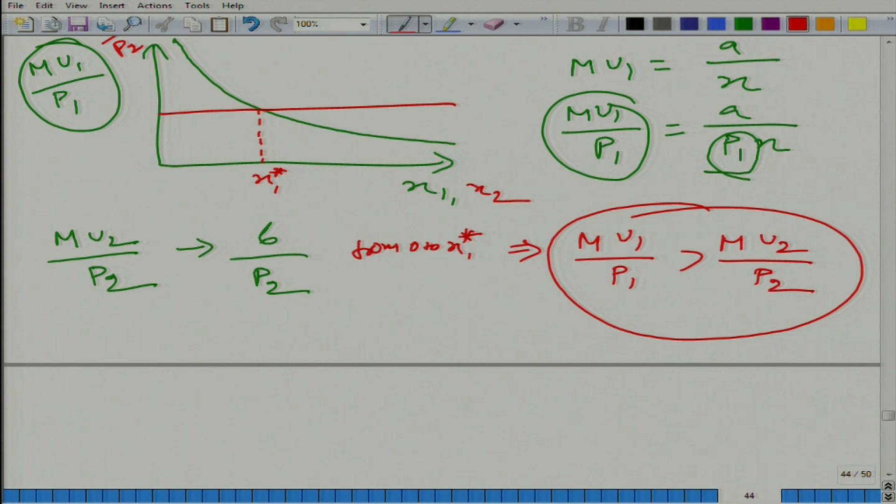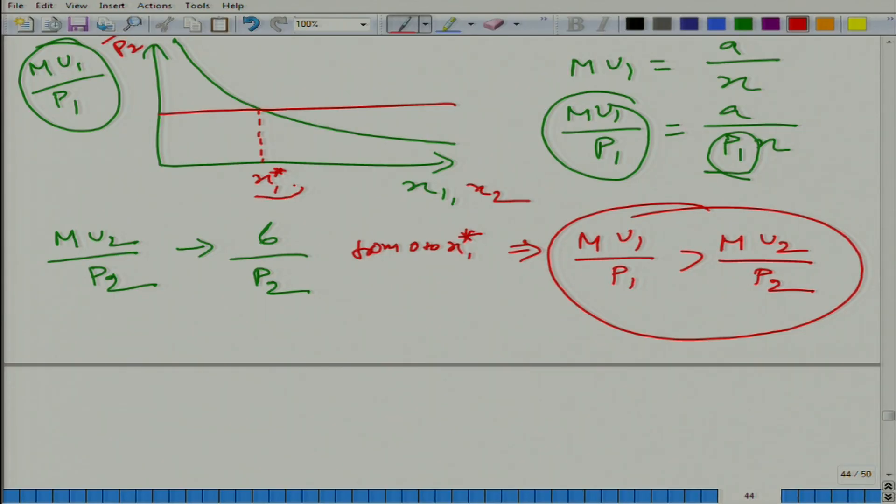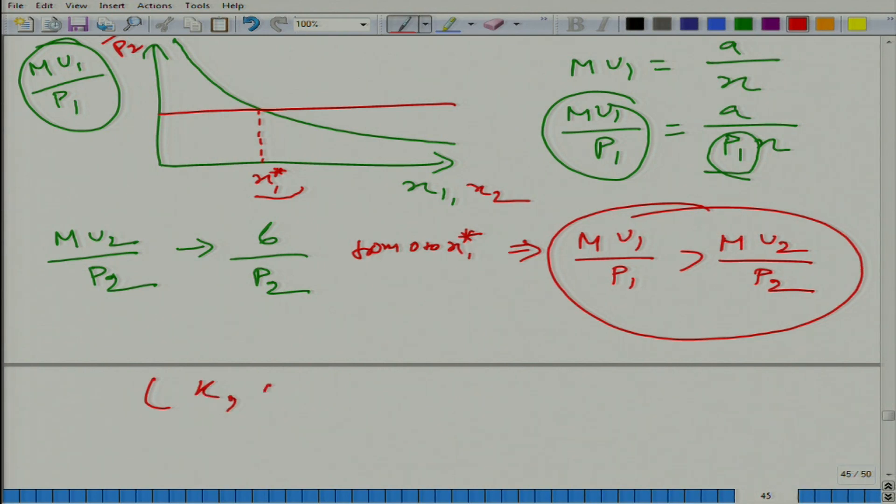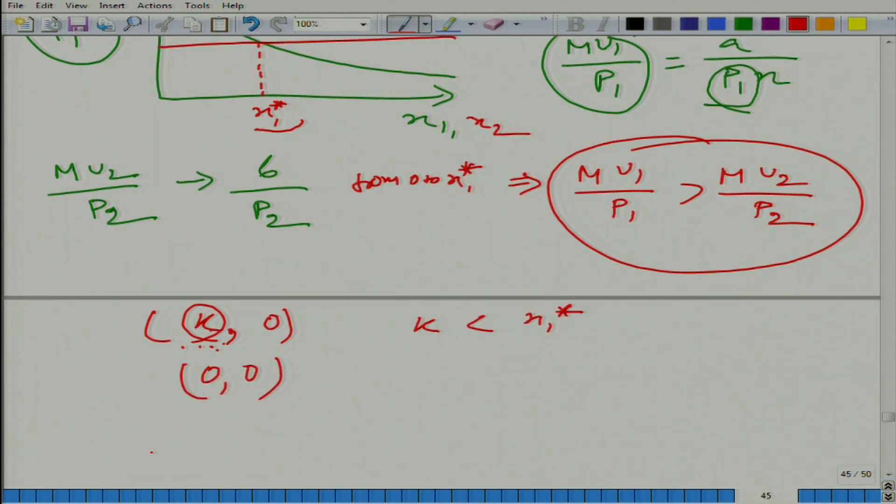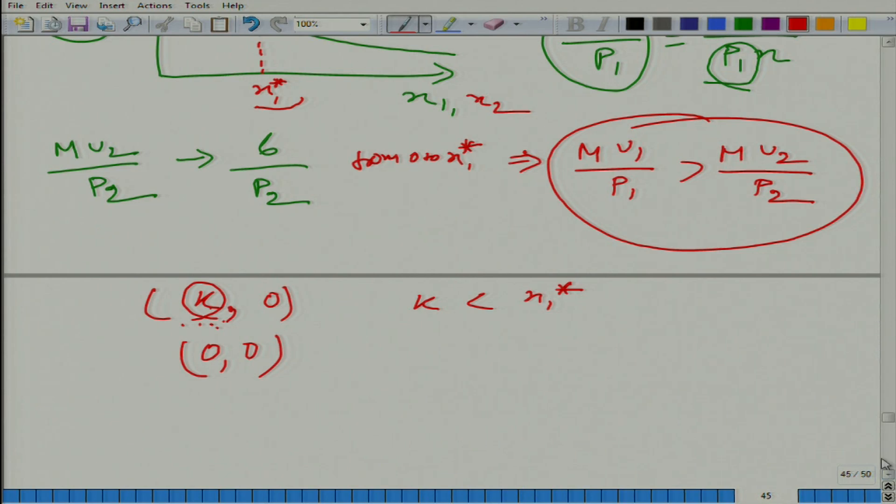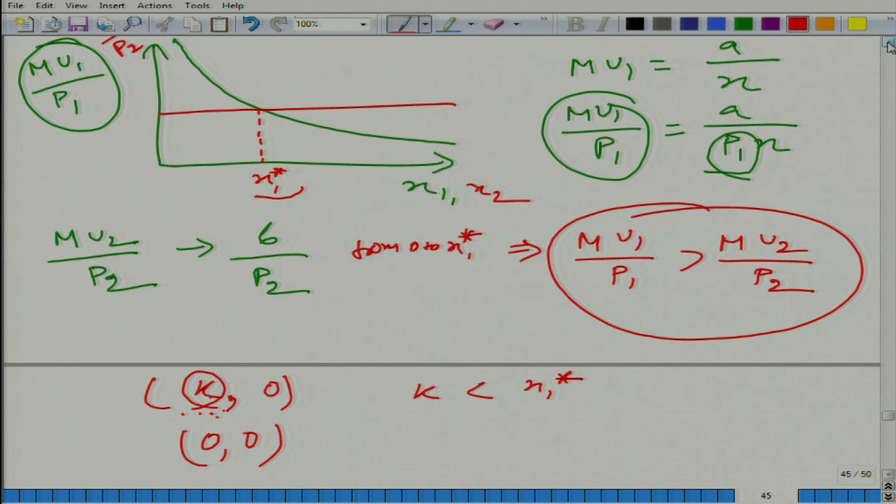What does this equation mean? What will be your interpretation for this equation? More of first good - he will buy only the first good up to this level. Unless this level is achieved, he will not buy the second good. Because let us say right now he has k comma 0, and k is less than x1 star. So it makes sense for him to spend one more rupee on good 1 rather than on good 2. So he will keep on buying good 1. You can think, you can stretch it little further - you can say he is starting from 0 comma 0, and of course, first unit he should buy of good 1. Why? Because mu1 divided by p1 is greater than mu2 divided by p2, and he will keep on buying good 1 until he reaches the level of x1 star.